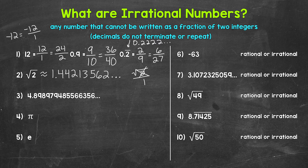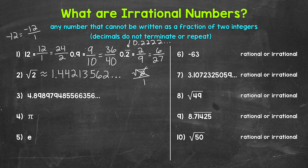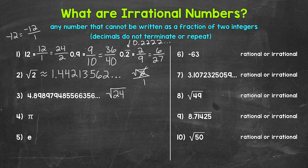Let's move on to number 3, where we have 4.89897948 and that decimal continues on. It does not terminate or repeat, so this is irrational. We cannot write this as a fraction of two integers. This decimal is actually what we get when we plug in the square root of 24 into a calculator.